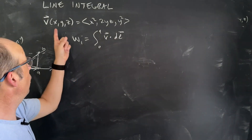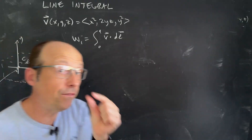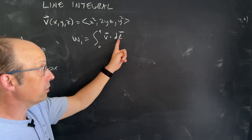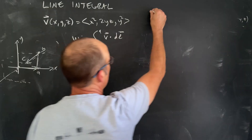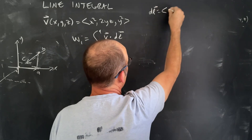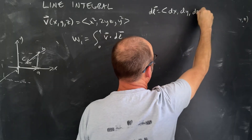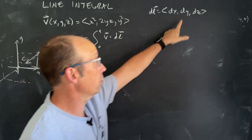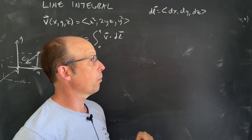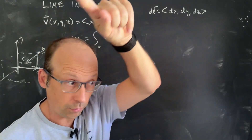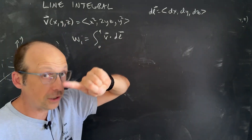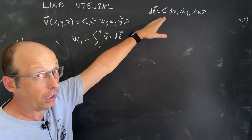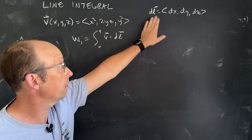Now I know v, but what about dl — what's my infinitesimal path length? Be careful: in Cartesian coordinates, dl is always going to be the same thing: dl equals the vector (dx, dy, dz). You may say we're only moving in the x direction along the first path, so shouldn't dy and dz be zero? No, they should not. Those things come from the limits of integration and the path you move along. So we keep dl as that — for Cartesian coordinates, that's your path length element.